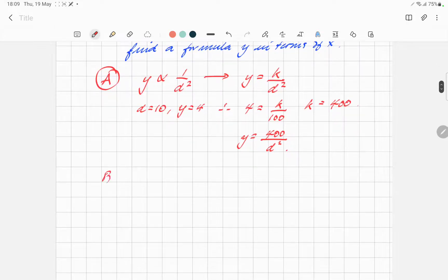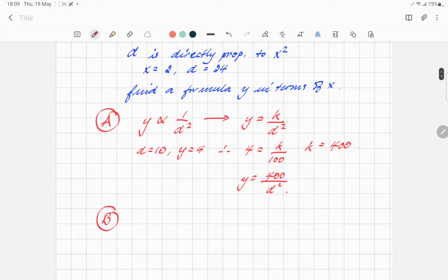The second bit, we're going to get something for d in terms of x. Now, d is directly proportional to x squared, so we're going to just jump to that stage, because I think you understand that bit. So, d equals k, x squared, directly proportional on the same line.